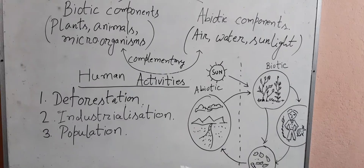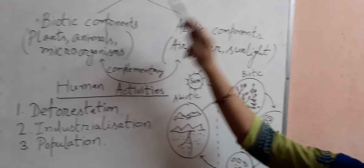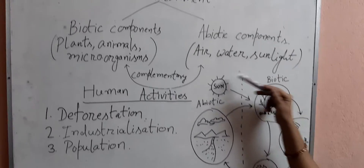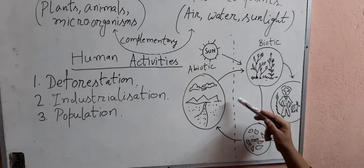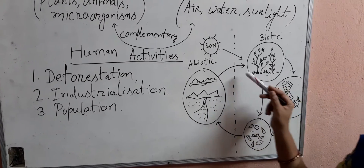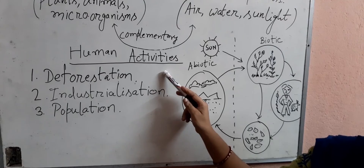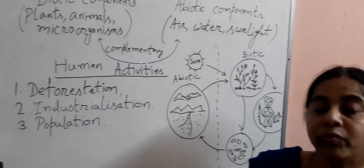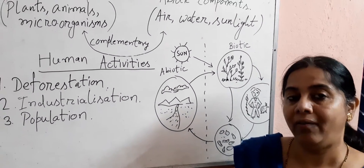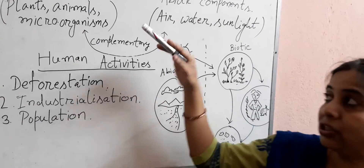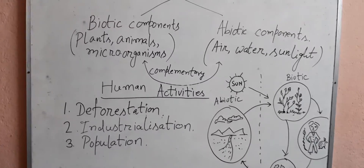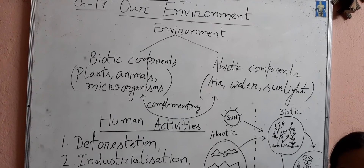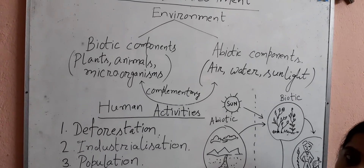Today I have discussed about the environment, the two types of factors of the environment, and how these two factors are dependent upon each other. I have also discussed some human activities like deforestation, industrialization and population growth, which are harmful for our environment. In my next class, I will discuss about the greenhouse effect and global warming.